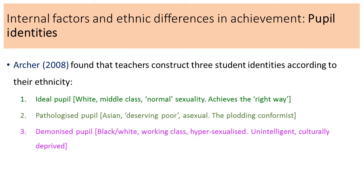Next, the pathologized pupils - these tended to be Asian, possibly from poor backgrounds but seen as the deserving poor - people who deserve help because they want to improve their lives. Teachers often view these students as asexual or not interested in the opposite sex, and they're often referred to as the plodding conformist - quietly getting on with it, quietly conforming to the rules.